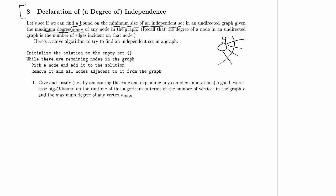The maximum degree of any node would be the degree of the node that has the most edges incident on it. Here's a naive algorithm to try to find an independent set in the graph.